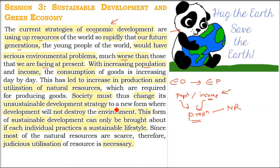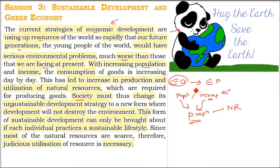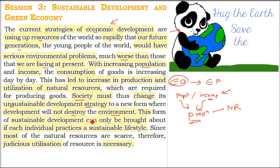So what do we need to think about? Society as a whole must change today's unsustainable development strategy. We have to change those strategies, methods, and techniques we are adopting, because they are going to destroy the environment. We need strategies for sustainable development that won't destroy our environment. And this can be brought only when you and me, as individuals, live a sustainable lifestyle.